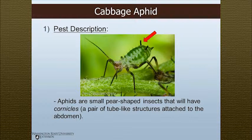The next pest is cabbage aphid. These guys are small, pear-shaped, soft-bodied insects — some have wings, some don't. Some are green, as in this picture, but some can be yellow, black, red, or brown. These guys have piercing, sucking mouthparts, so instead of chewing a bite out of your canola plant, they are sucking the plant juice out of the plant.